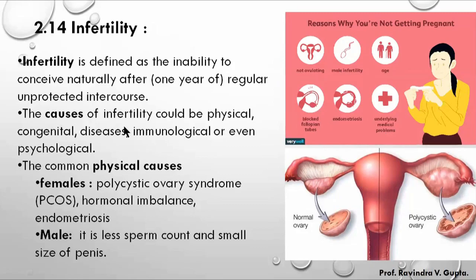The causes of infertility could be physical. Physical causes relate to problems in the fallopian tube and reproductive structures. These are classified as physical problems.